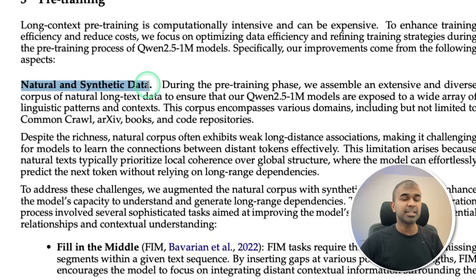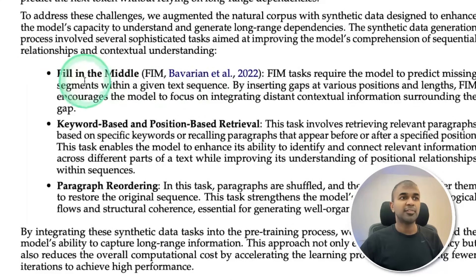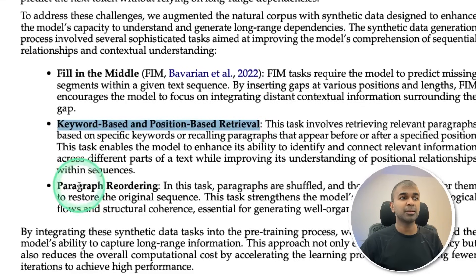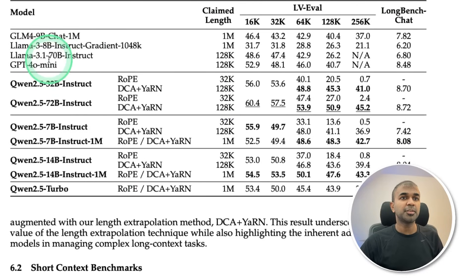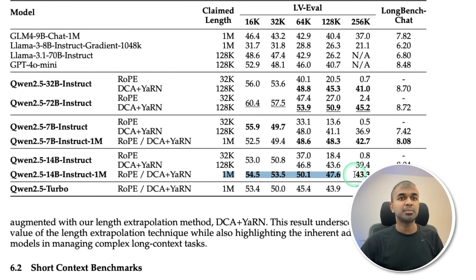They used both natural and synthetic data, focusing on fill-in-the-middle, keyword-based, positional-based retrieval, and paragraph reordering to improve performance. Here is the comparison between other models and Qwen 2.5 14B Instruct with other versions — this clearly beats all of them.